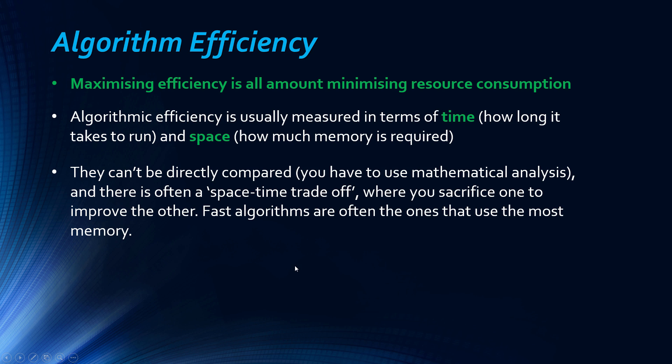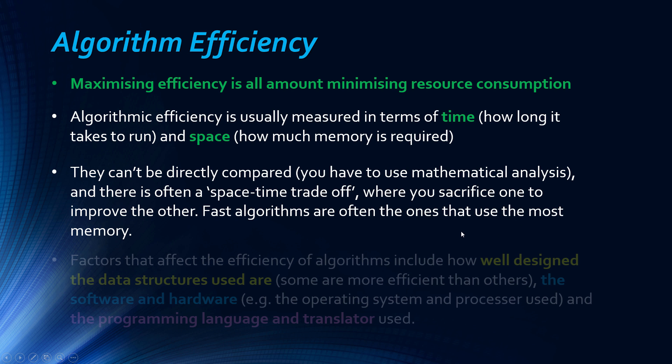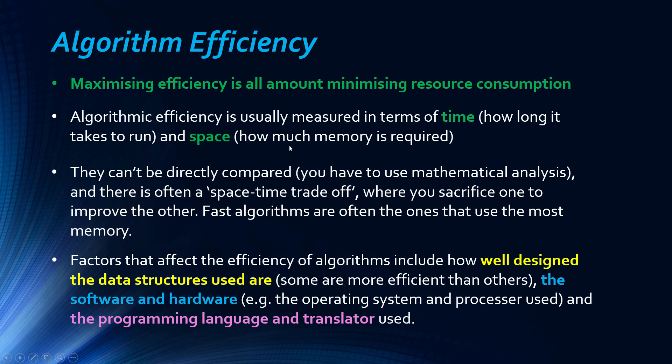And there's often a trade-off, where you increase one to decrease the other. Which isn't ideal, but you have to make a sacrifice. And often, the fastest algorithms are the ones that use the most memory. And there are other factors. For example, I want to know some factors. There's quite a few factors that can affect efficiencies, and often very specific ones. But they include how good your data structures are. Some can be better than others. Some can be more efficient, especially if you're defining them as a user, if they're not built in. Other factors are the software and hardware, so the programs, applications we're running. And actually, the translator. We'll look at translators later, but what's actually converting your code into the binary, and the actual language you're using. So there's other factors, but those would be more than enough to talk about in an exam question, I think.